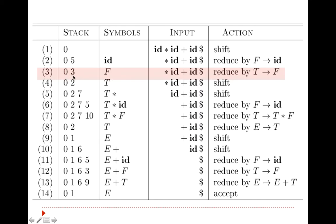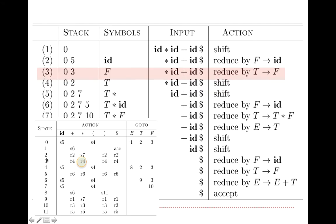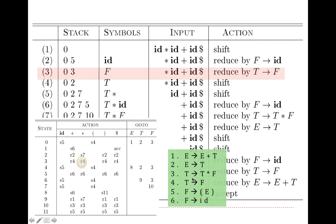The top of the stack is now 3 and the present input is star. We refer to 3 and star and get reduce by rule number 4. Rule number 4 is t gives f, so we reduce by t gives f. The f gets replaced by t, and because the right-hand side has a single symbol, that single state is popped from the stack. What remains at the top is 0, so we refer to 0 and t in the goto part, which gives state 2. So 2 gets pushed onto the stack.